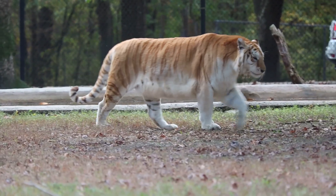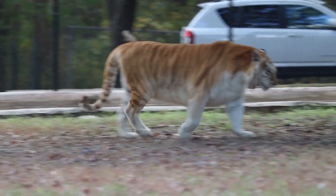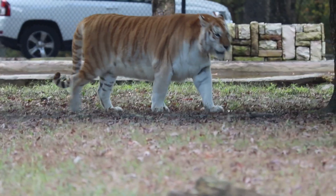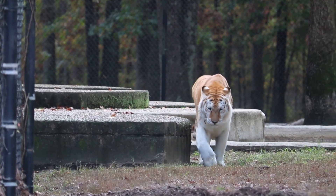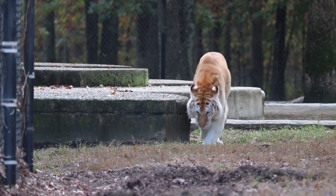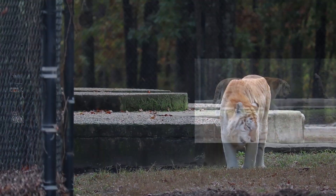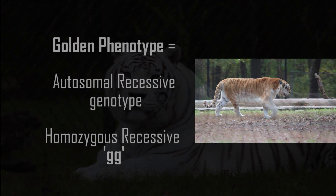The golden phenotype is a light orange color with orange stripes. This is an autosomal recessive gene, meaning the same recessive gene must come from each parent. For our purposes, the genotype for this animal would be lowercase g, lowercase g.